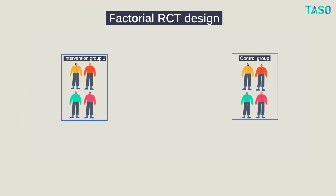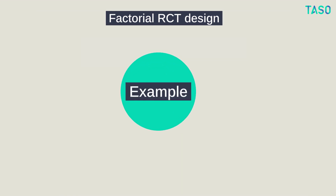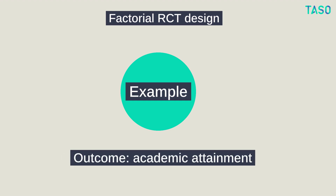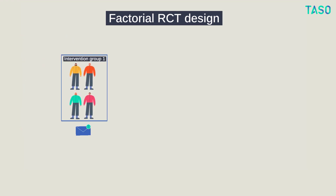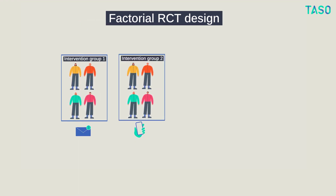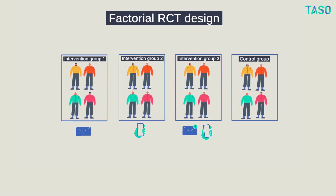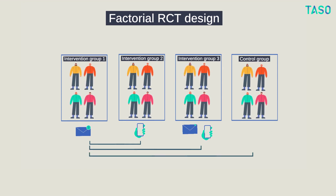In factorial RCTs, there is one control group but several intervention groups, each receiving a combination of two or more interventions. Here's an example of an RCT testing the impact of information provision around financial support and the mode of that provision on an academic attainment outcome. Group 1 receives an email prompt about available financial support. Group 2 receives the same information but in a phone call. Group 3 receives both the email and the phone call. The control group receives neither email nor phone call. In factorial RCTs, all intervention groups' outcomes are compared to the control group outcomes, and also to each other.